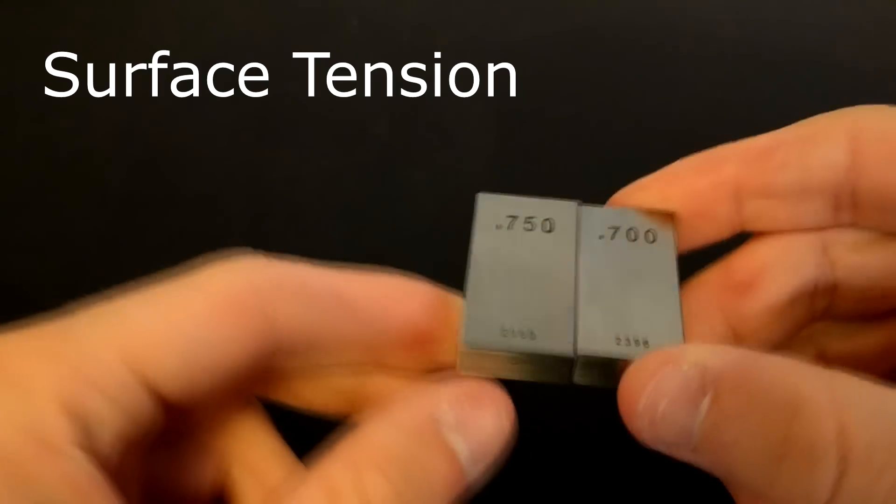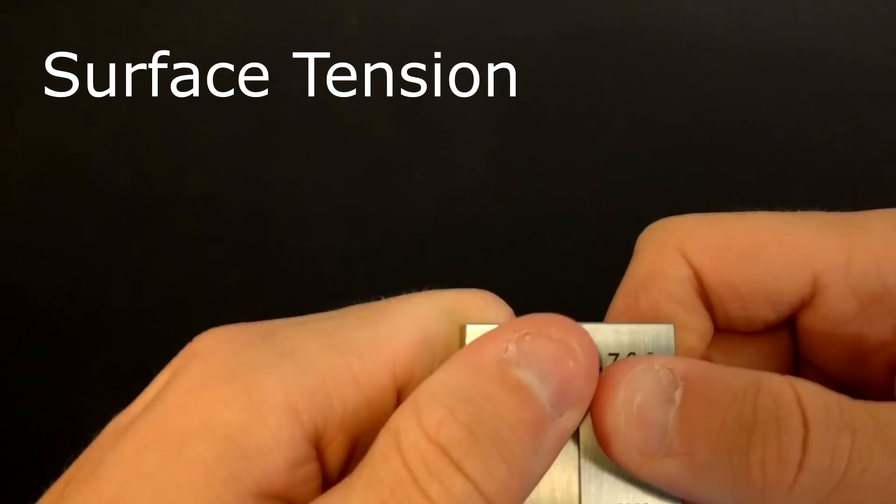Second of all, the surface tension from oil and water vapor on both blocks might hold them together.